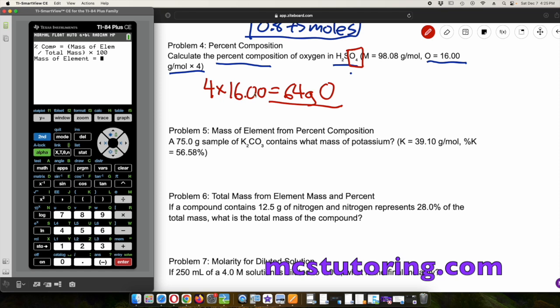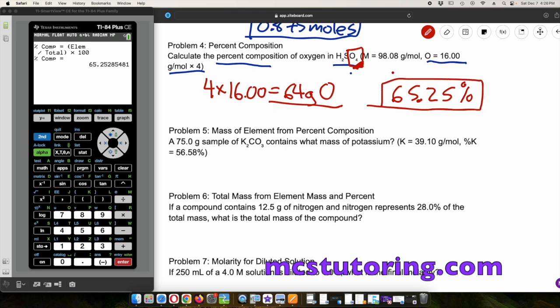64 grams of oxygen in this whole thing, which is 98.08 grams per mole. The mass of the element in this case, the oxygen is 64. The total mass is 98.08 and they gave it to us. Otherwise you might have to do it by hand. Percent composition is 65.25%. We do have the formula. If you do have to write it down, the percent comp is going to be the element over the total mass, element mass over total mass times a hundred.